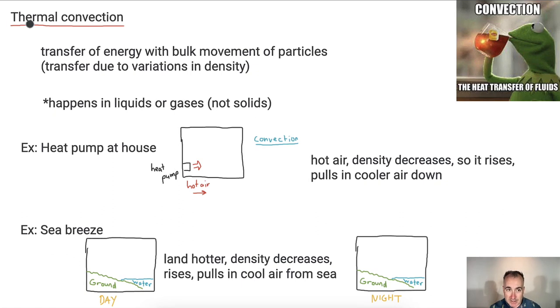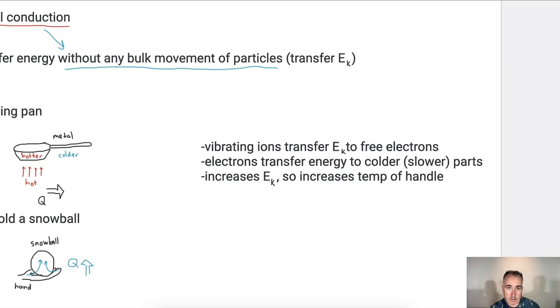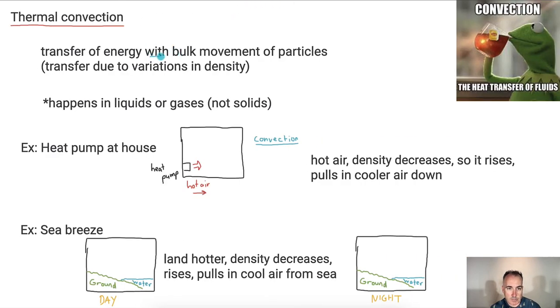Thermal convection is the easier one to understand. Thermal conduction was transfer energy without any bulk movement of particles. This one is with a bulk movement of particles, when particles actually move. The transfer is due to variations in density. Because densities are different with hot things and cold things, things tend to move. This tends to happen more in liquids and gases, not really so much in solids.